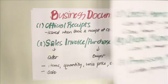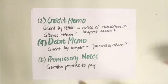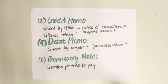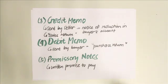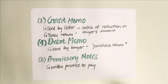We have the credit memo, which is sent by the seller — it's a notice of reduction in the buyer's account, and it's indicative of a sales return. The debit memo is similar, but it is issued by the buyer. So if the credit memo is indicative of a sales return, a debit memo is indicative of a purchase return.